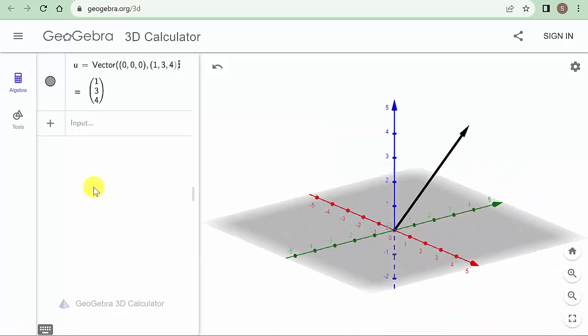All right, and then we want to put in our second vector. So I'm going to put vector and I'll come over here and put start point to endpoint, so parenthesis zero comma zero comma zero, and then we'll put our vector in, which is two seven negative five and hit enter.